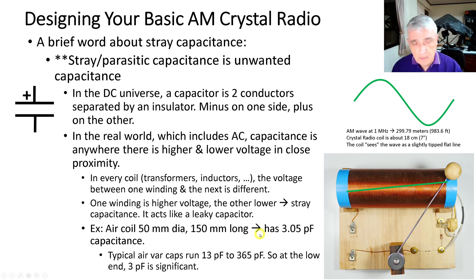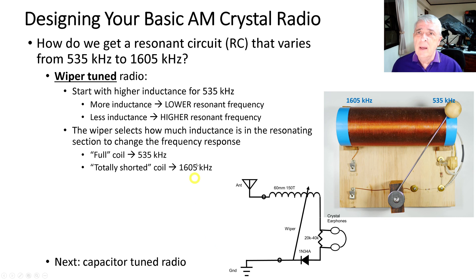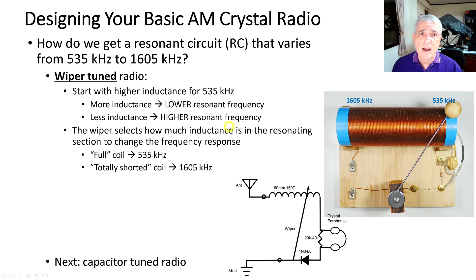How do we get a resonant circuit that varies from 535 to 1605 kHz? In a wiper-tuned radio we start with a higher inductance — remember, more inductance means lower frequency — and then reduce inductance to reach higher resonant frequencies. The wiper selects how much inductance is in the resonating part of the coil. The antenna connects at one end and the signal travels down the coil until it hits the wiper, then exits to ground.